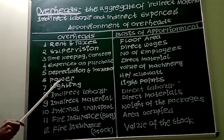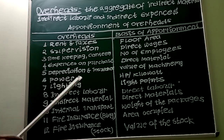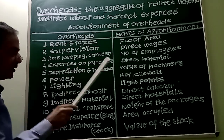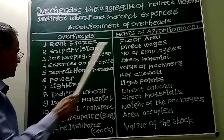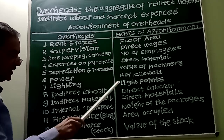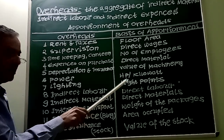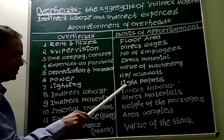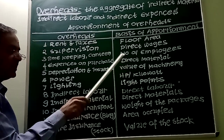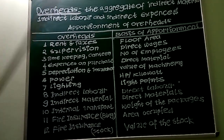Depreciation and insurance on plant and machinery can be apportioned on the basis of value of machinery. Power is always apportioned on the basis of technical estimates — horsepower or kilowatts. Lighting is apportioned on the basis of light points; if light points are not given, it can be apportioned on the basis of area occupied, assuming more space requires more lights.